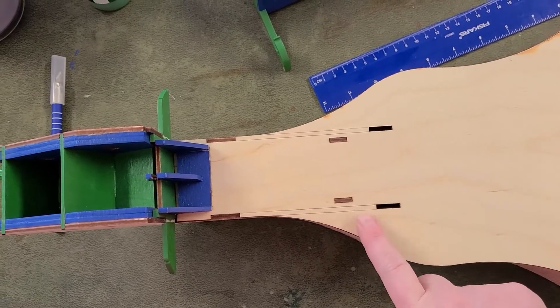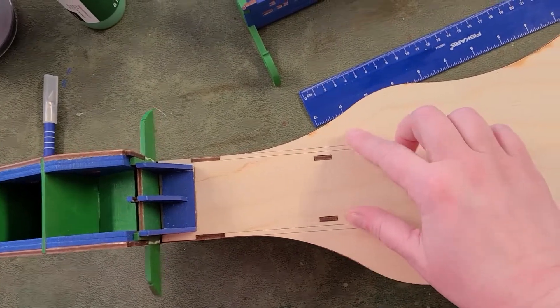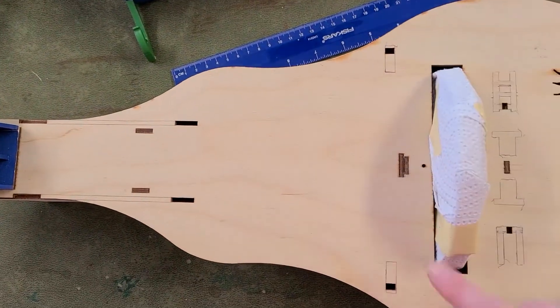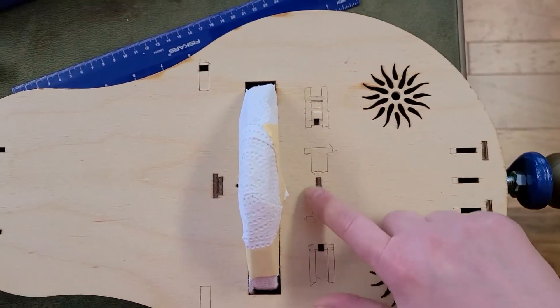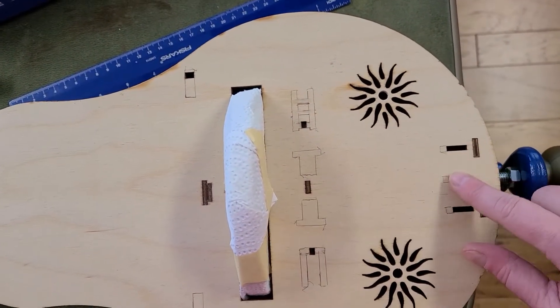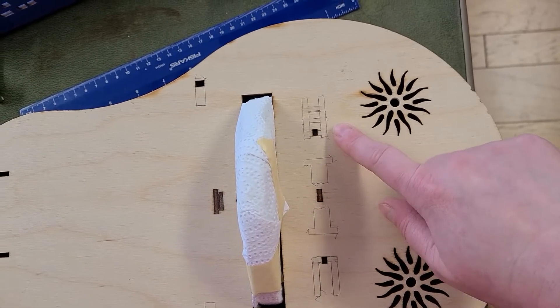I didn't film the bit where I paint the gerdy, but I want to point out that I outlined where the keybox and various bridges will be glued down. I made sure to paint outside these lines, for the most part, to make sure that the glue had a good surface to grab onto while it dried.